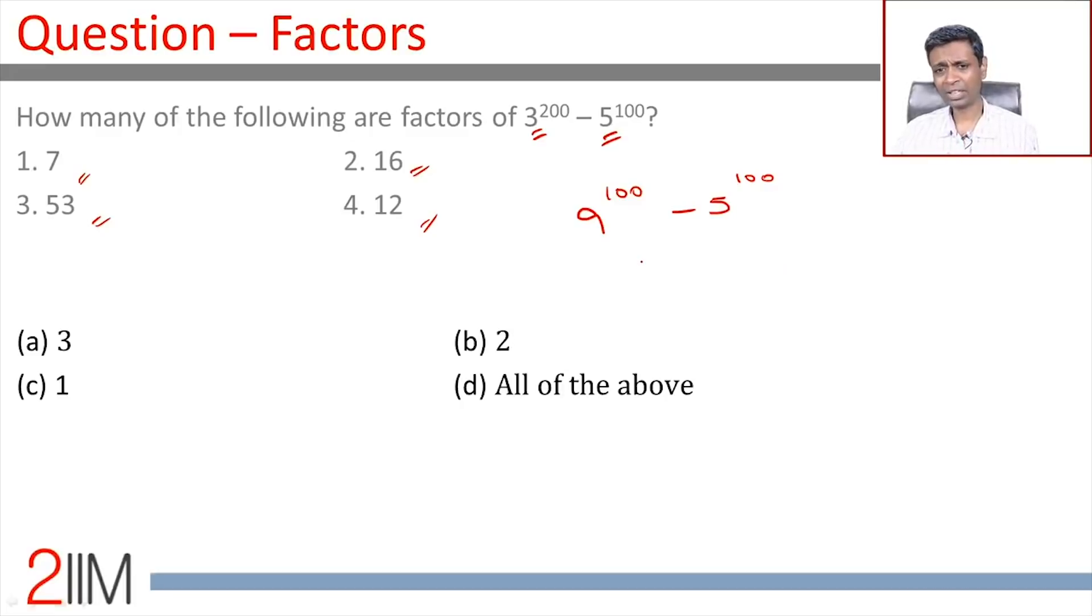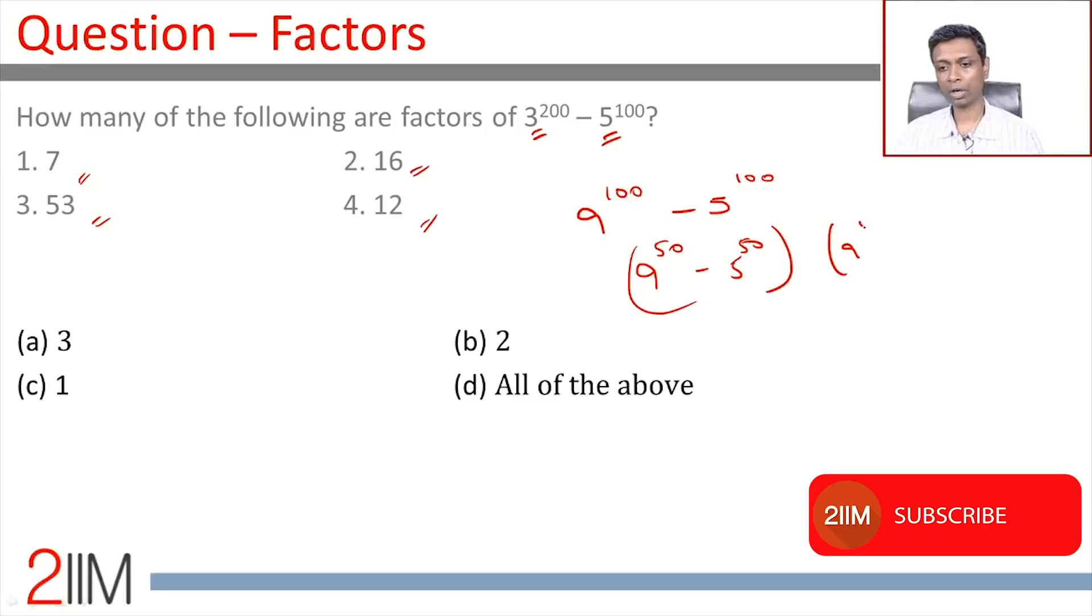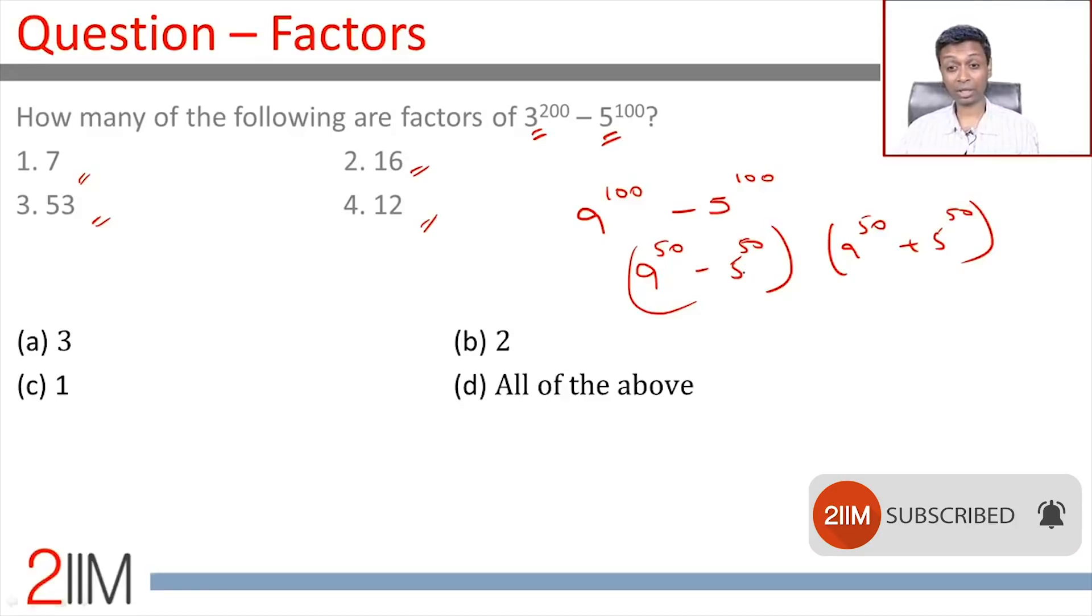I am going to break this down. This is the form a² - b². So we can write this as (9^50 - 5^50)(9^50 + 5^50). This 9^50 - 5^50, we can write this as (9^25 - 5^25)(9^25 + 5^25)(9^50 + 5^50).